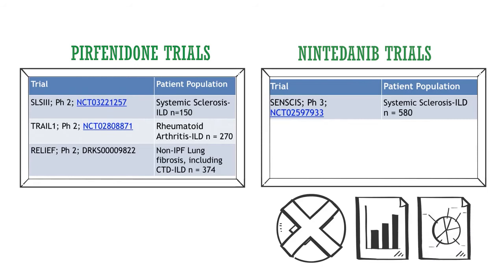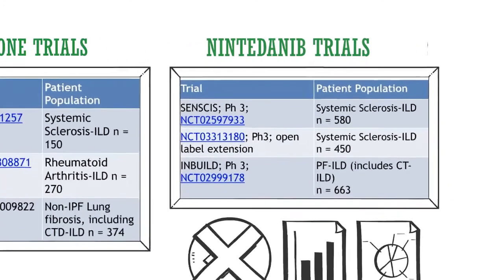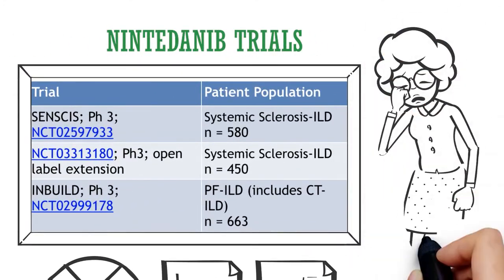And then the other trials that are listed here, also another in systemic sclerosis as well as the INBUILD trial. This is a trial enrolling patients with all fibrosing lung diseases that is of a progressive nature. So many of these patients may be patients who will have chronic hypersensitivity pneumonitis as well.